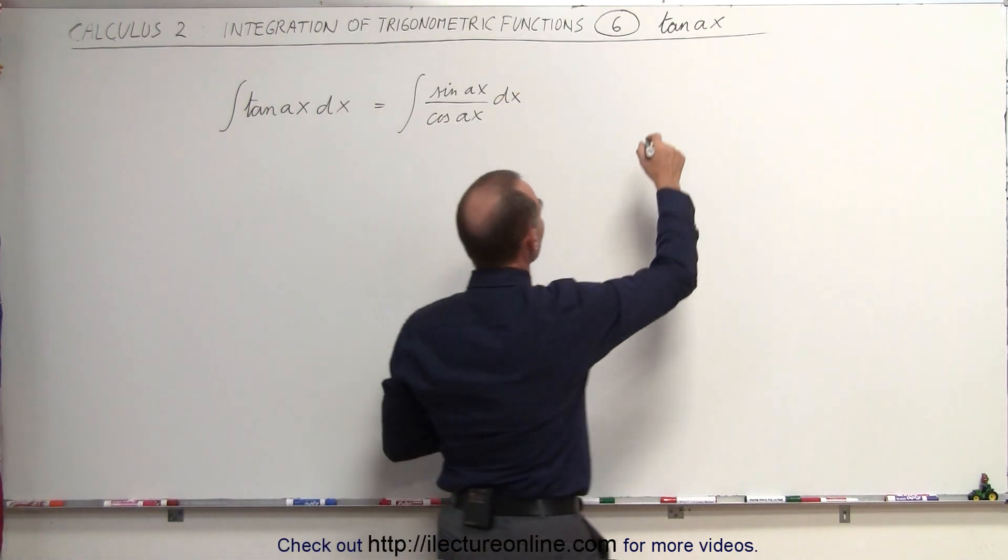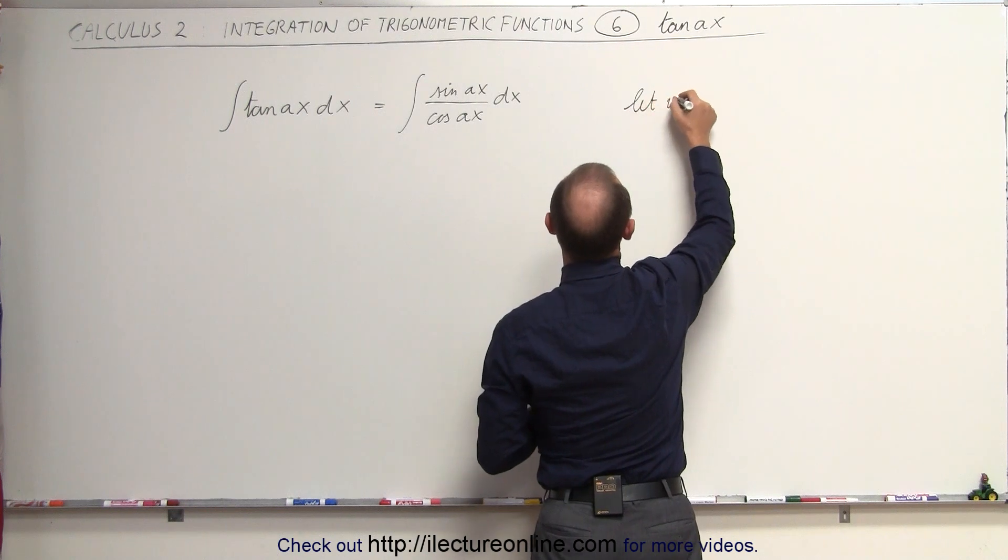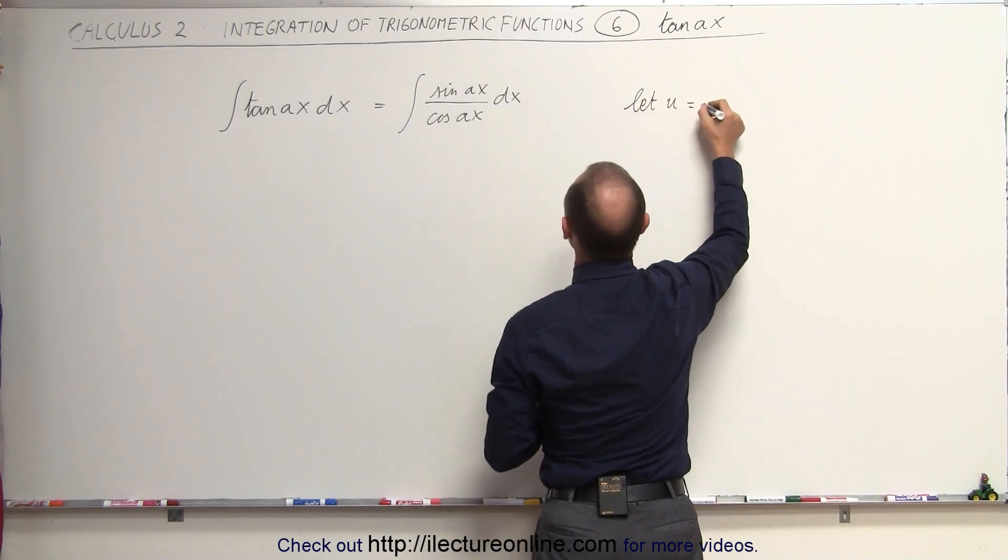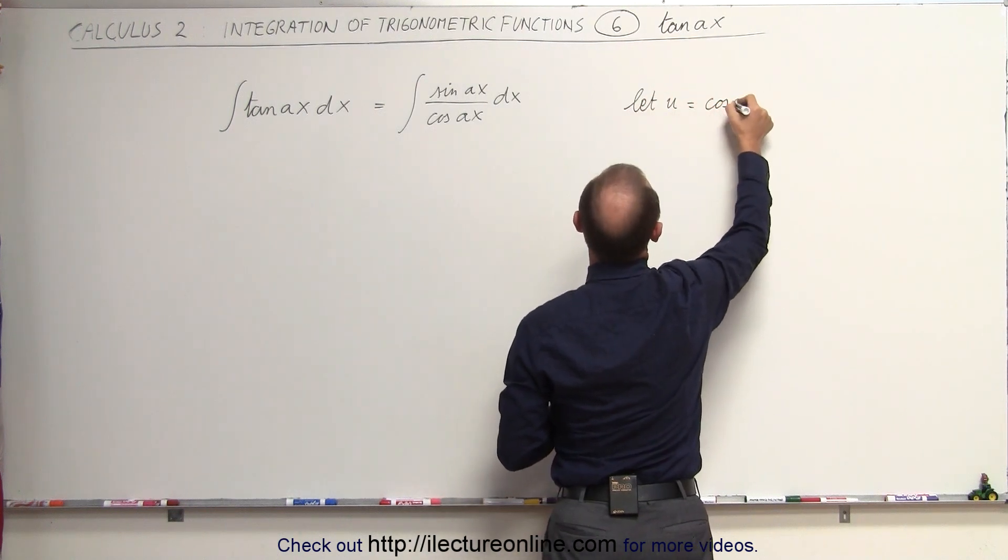Again, we need to use a substitution. Let u equal what's in the denominator. In this case, that's going to be equal to the cosine of Ax.